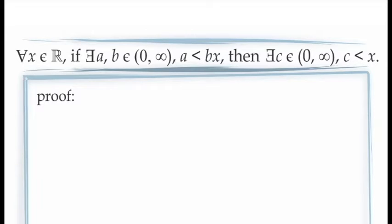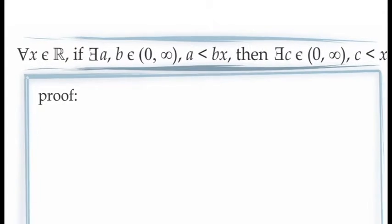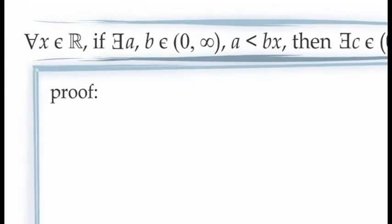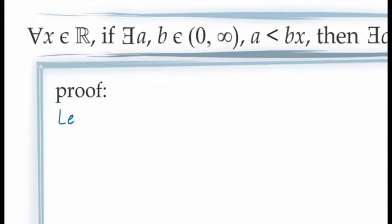First, using a direct proof, and second, using a proof by contraposition. In either case, we need to begin our proof by introducing x as an arbitrary real number. This is because we're trying to prove this statement holds for all values of x in the real numbers.